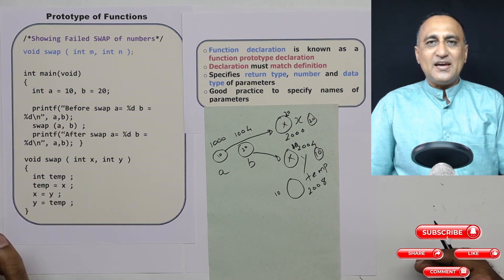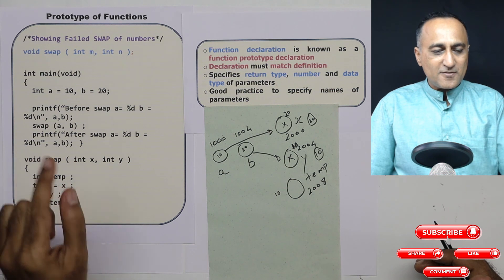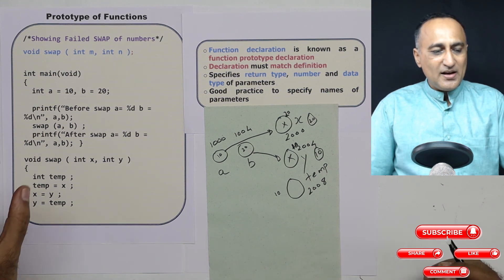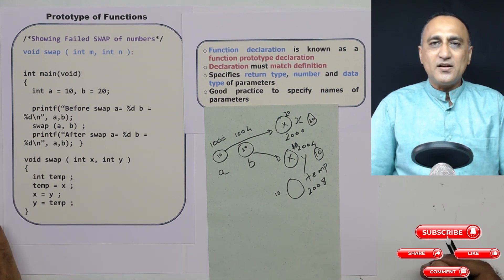So I hope this makes it really clear what is a function prototype, what is a function signature, what all is necessary, and what are the good practices while developing code in C.